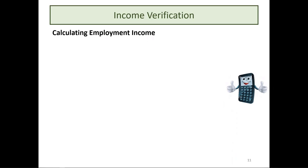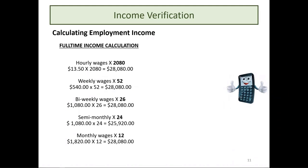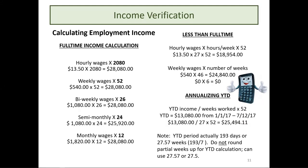Now for calculating employment income. For full-time employment, use hourly wages times 2,080 hours per year. For example, $13.50 per hour times 2,080 equals $28,080 per year. Alternatively, weekly pay times 52, bi-weekly pay times 26, semi-monthly times 24, or monthly wages times 12. For less than full-time, calculate hourly wage times hours per week times 52 weeks. For example, $13.50 per hour times 27 hours per week times 52 weeks equals $18,954.